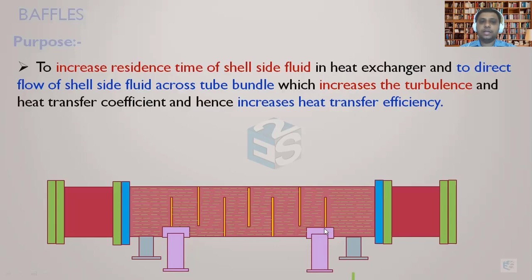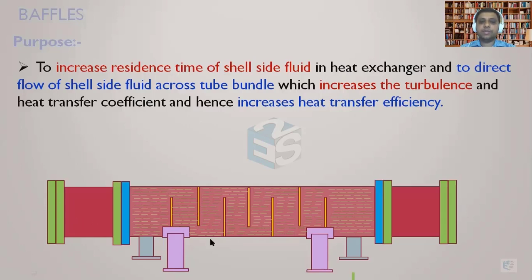To summarize: the primary function of a baffle from a process point of view is to increase the residence time of the shell side fluid in the heat exchanger, and to direct the flow of the shell side fluid across the tube bundle, which increases turbulence and heat transfer coefficient, and hence increases heat transfer efficiency.